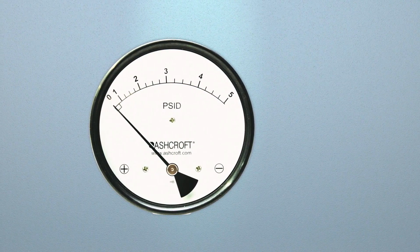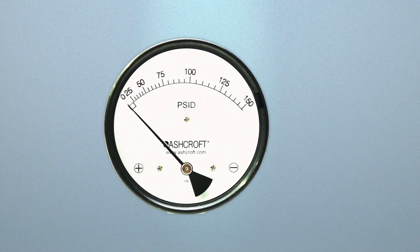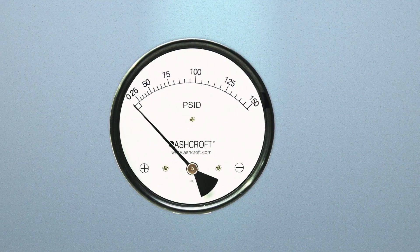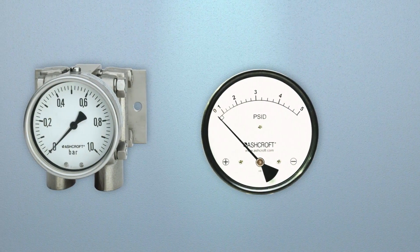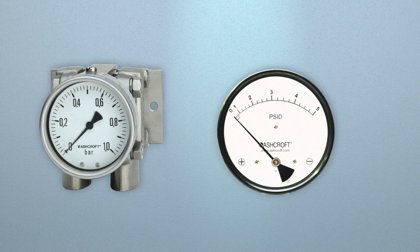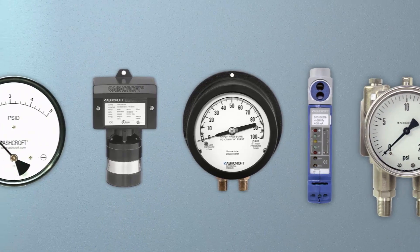When specifying a differential pressure instrument, there are two important factors to consider. The first is the DP range, which is based upon the most difference in pressure that the restriction is likely to produce. The second is the instrument's ability to contain the line or static pressure level.